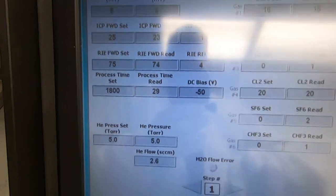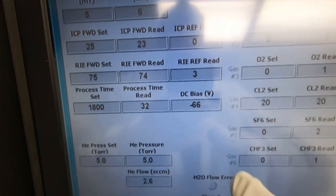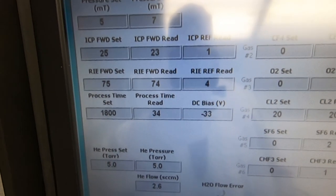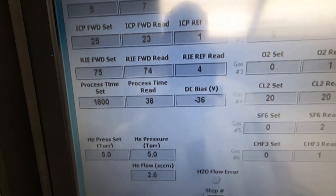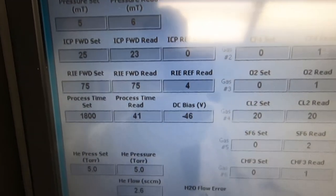But the big complaint is that either the measurement circuit for DC bias is somehow flawed or that the tool is not actually maintaining a decent DC bias.